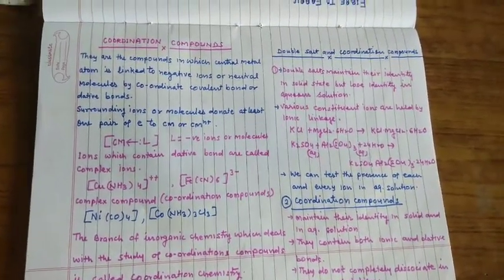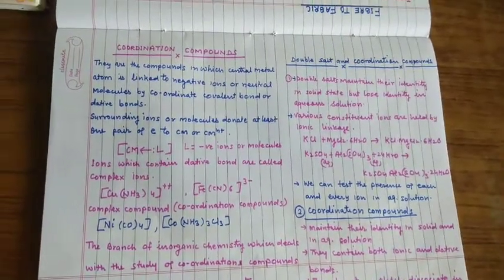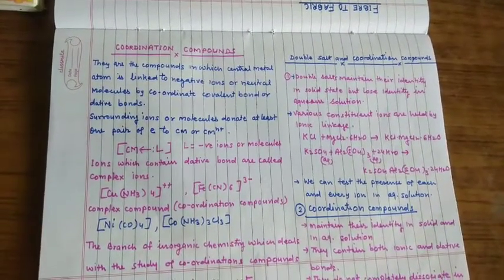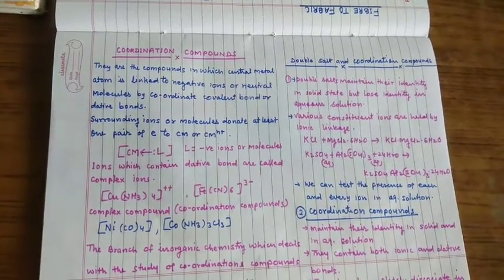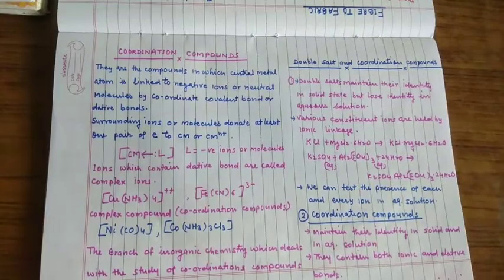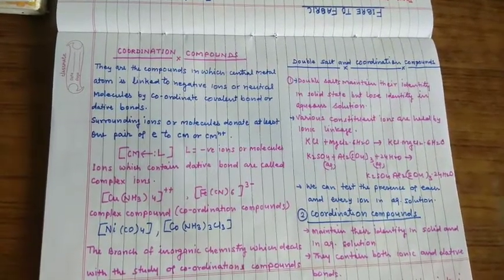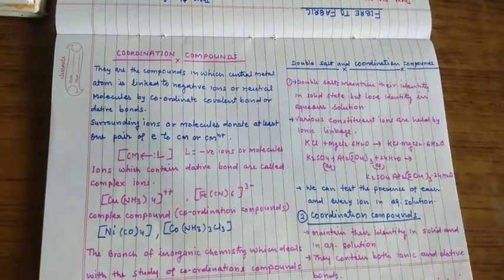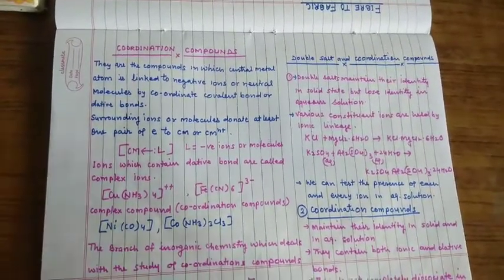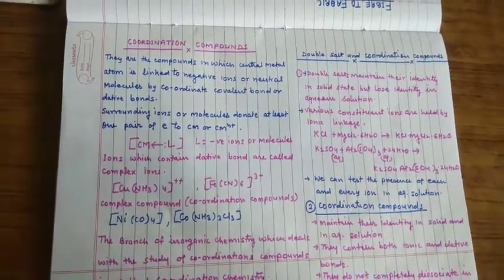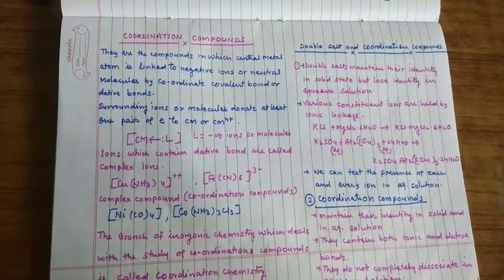So let us start, what is coordination compound. Coordination compound means the compound which contains dative bond or coordinate covalent bond between central metal atom and the surrounding species that may be negative ion or neutral molecule.